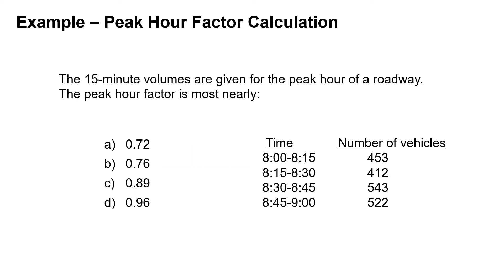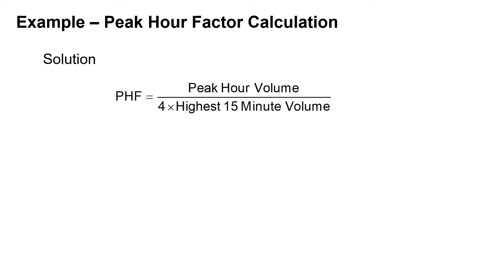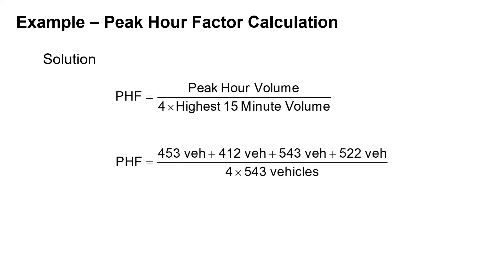Let's take a look at a more realistic example. We're given 15-minute volumes during the peak hour for a roadway and asked to find the peak hour factor. From 8 to 9, the 15-minute volumes are 453, 412, 543, and 522. The peak hour factor equals the total peak hour volume divided by four times the highest 15-minute volume. So that's 453 plus 412 plus 543 plus 522 divided by four times 543, giving us a peak hour factor of 0.89 — answer C.